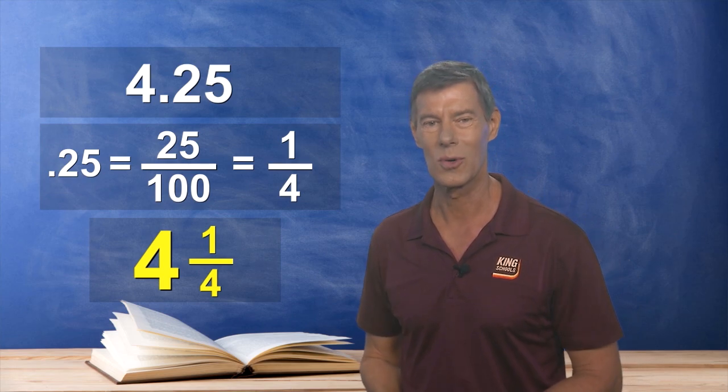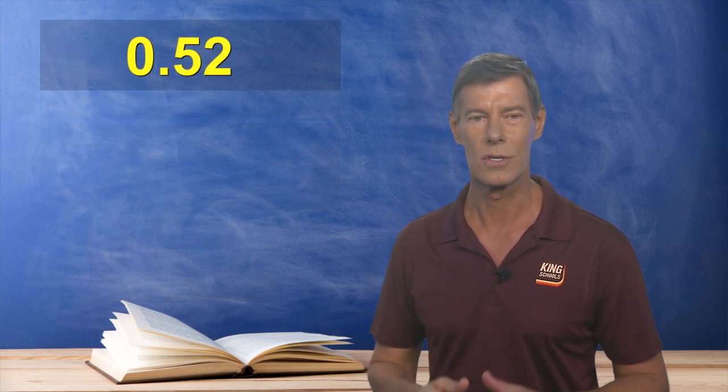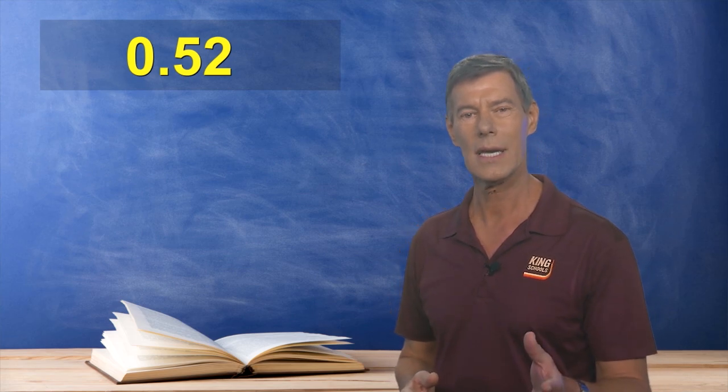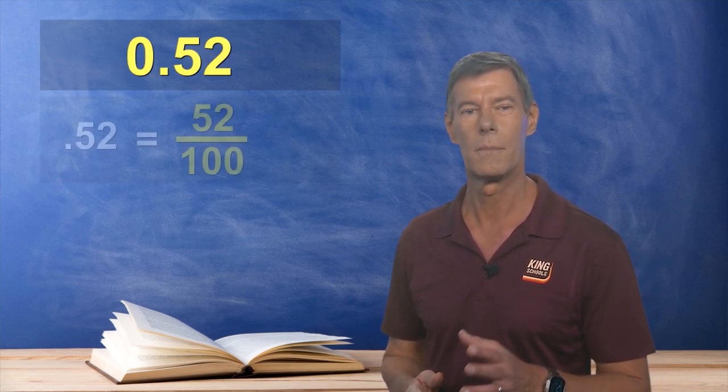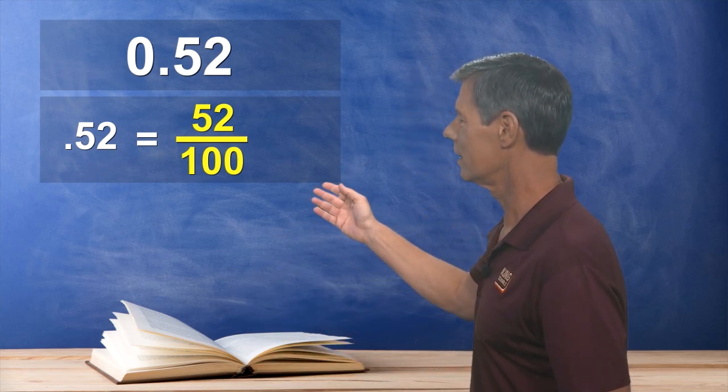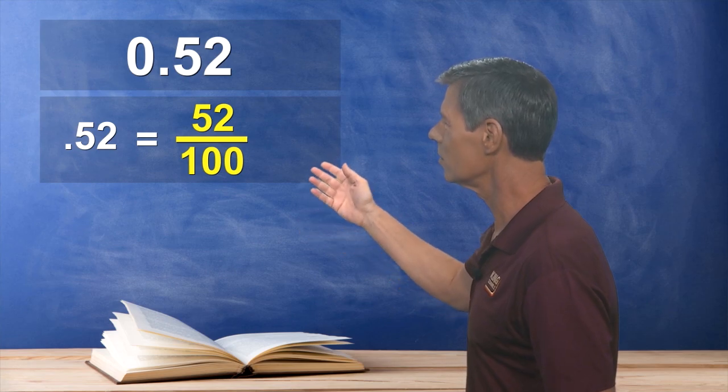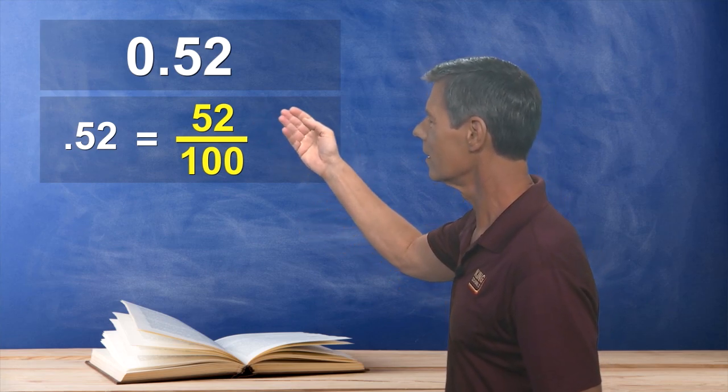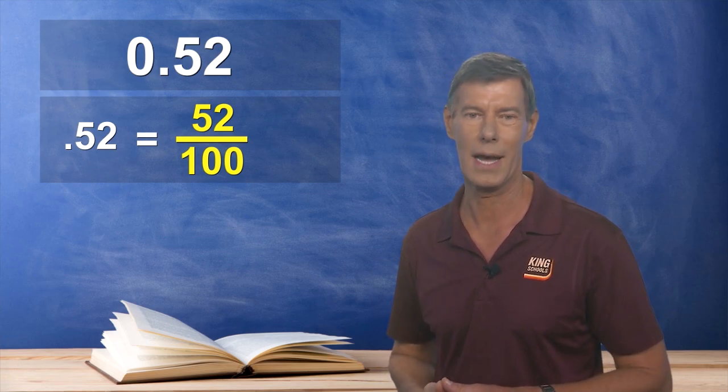So what do you say we try a harder one? What would 0.52 be, shown as a fraction? Well again, start with the numbers to the right of the decimal point, and put that number, 52 over 100. Now in this case, we can't divide both numbers by the numerator, 52. So we have to find the next highest number that we can divide both numbers by.